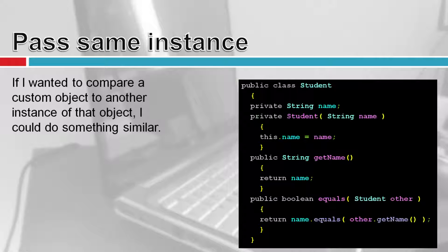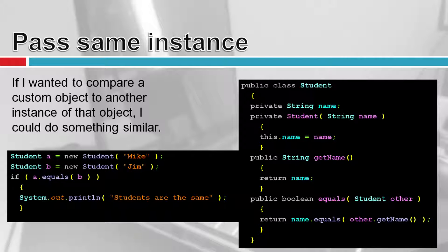You can do something similar with a custom object. Say I want to see if two student objects are the same — maybe I just want to compare their names. Here I've got a student class with a function called 'equals' that takes another student as a parameter. I get the name of the first student and compare it to the other student's name. For example, with student Mike and student Jim, calling 'studentA.equals(studentB)' checks whether 'Mike'.equals('Jim') and returns true or false.